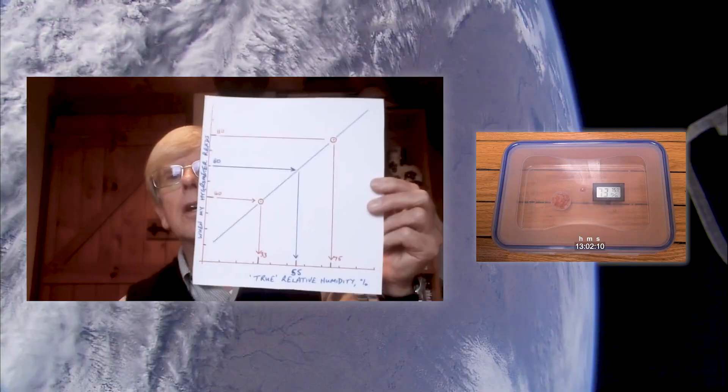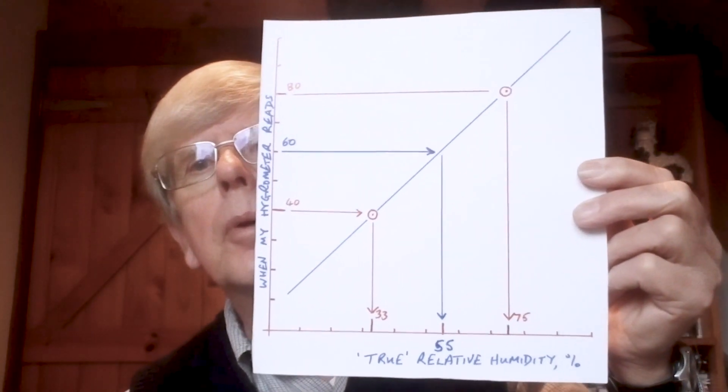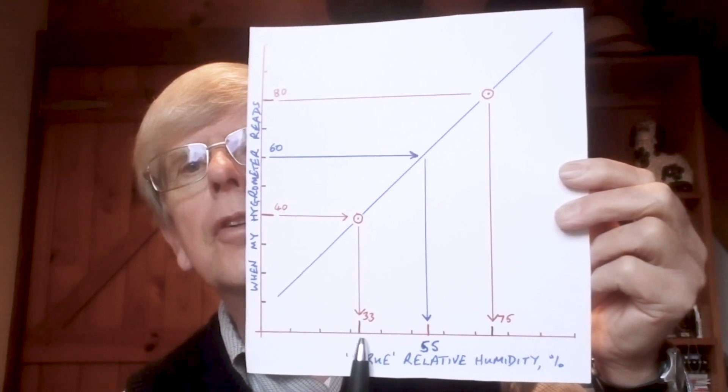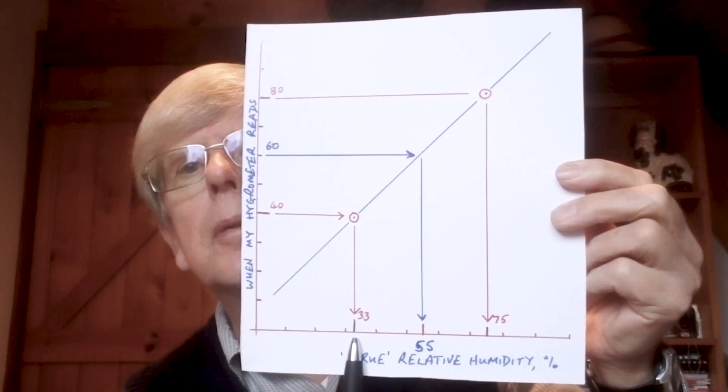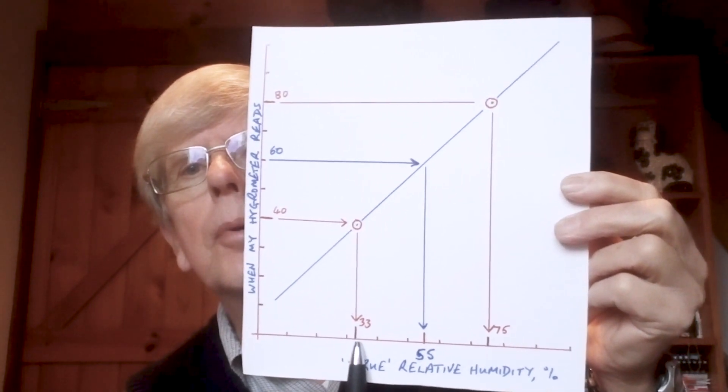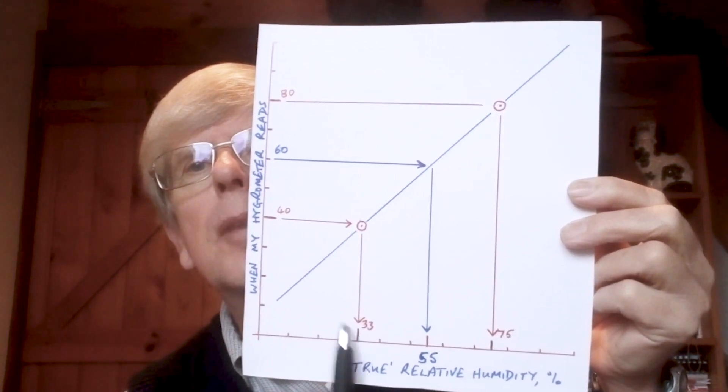And I'm hoping that this little graph here shows up well enough. So what we've got along the bottom here is, for example, we've got our 33% relative humidity, which corresponds to the magnesium chloride solution.